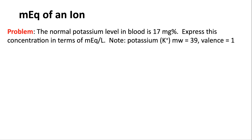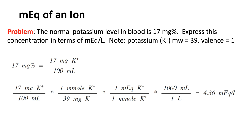Let's apply this knowledge to our first question. We start with 17 milligram percent potassium and want to convert it to milliequivalents per liter. First, restate 17 mg% as 17 milligrams of potassium per 100 milliliters of blood, since percent means per hundred. That's the starting concentration.